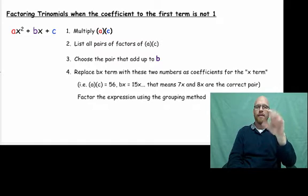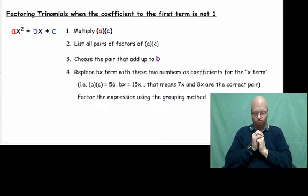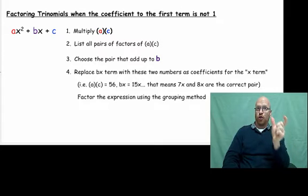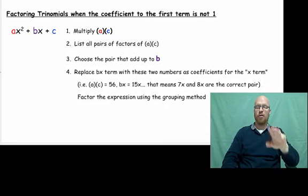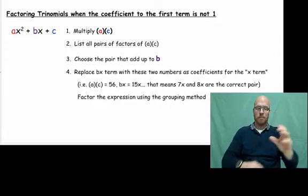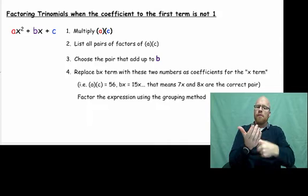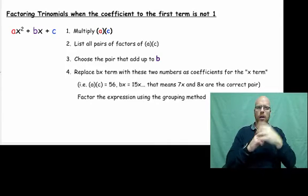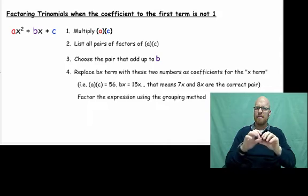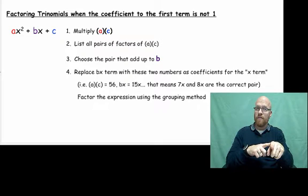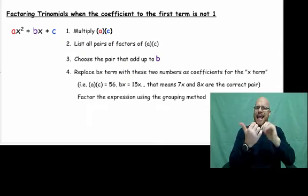Today we're going to talk about factoring trinomials. We have three terms: our first term, the ax squared term; our middle term, the bx term; and our last term, the c term. We're talking about trinomials where the first term — the coefficient a — doesn't equal one. It's a little bit more of a challenge to factor these problems, but we're going to talk about how we can approach them to make it more doable.